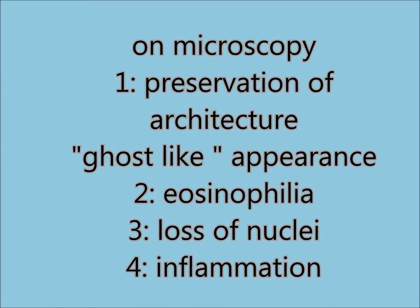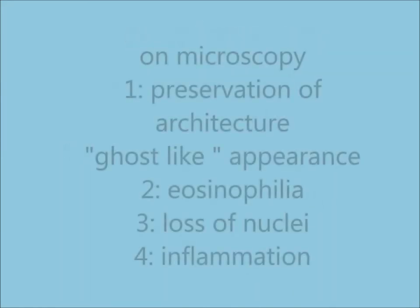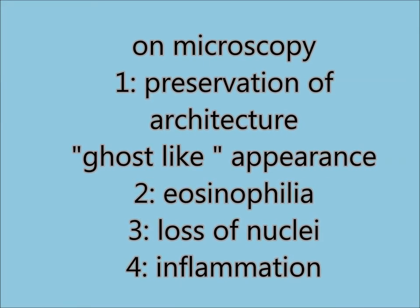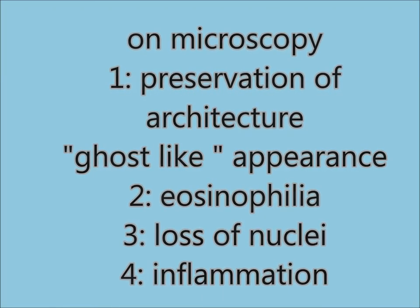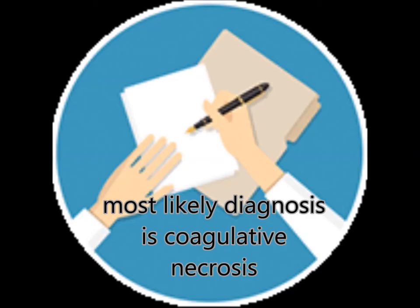On the area of necrosis there is a ghostly appearance and there are no nuclei in the cells. On microscopy, the key features are: preservation of architecture with ghost-like appearance, eosinophilia, loss of nuclei, and inflammation — because inflammation is always present in necrosis.